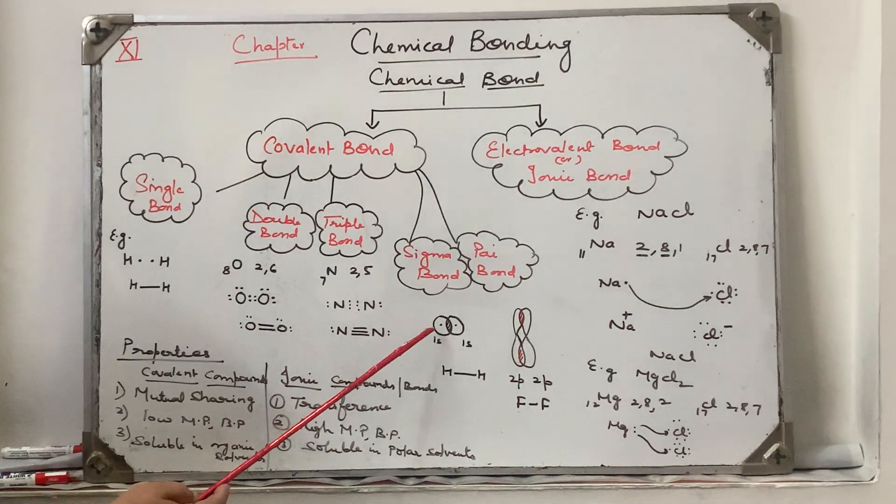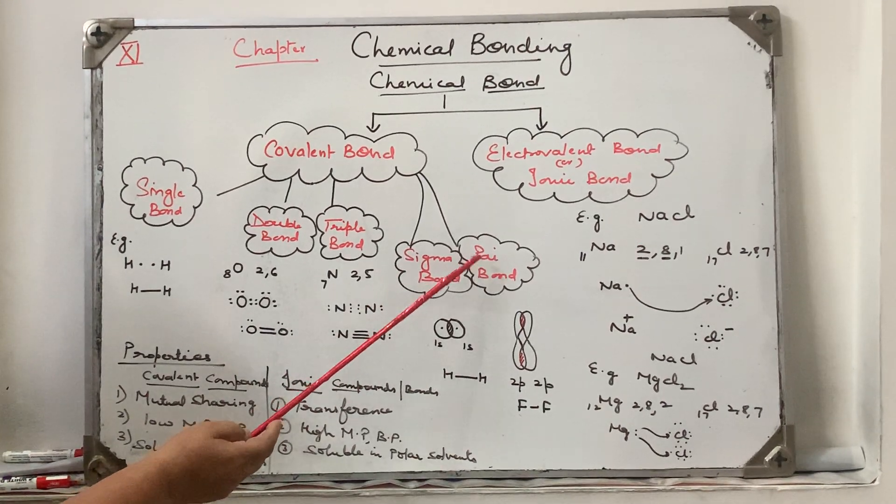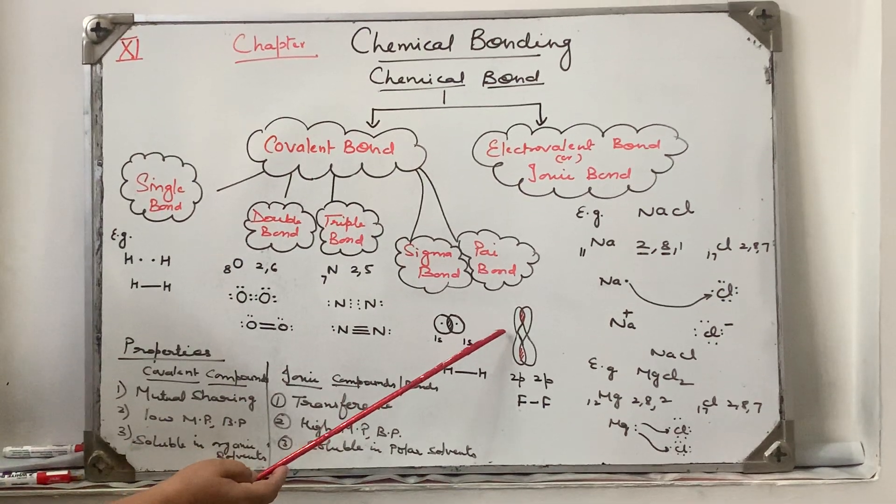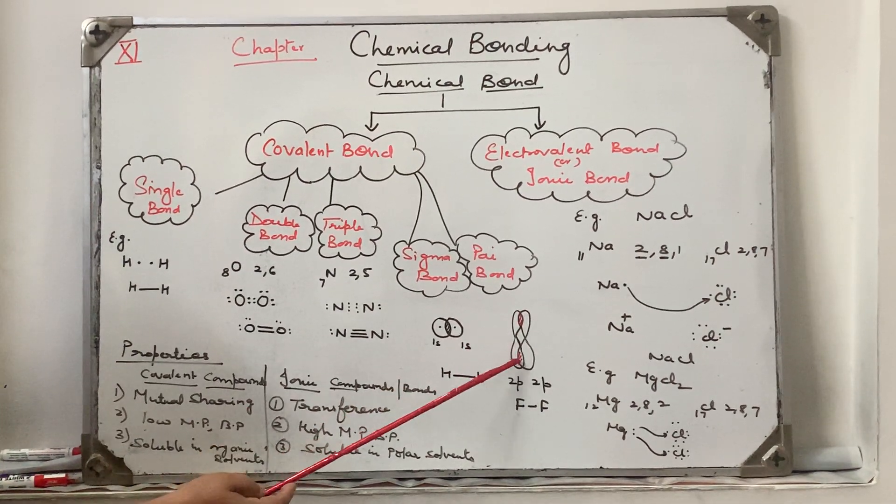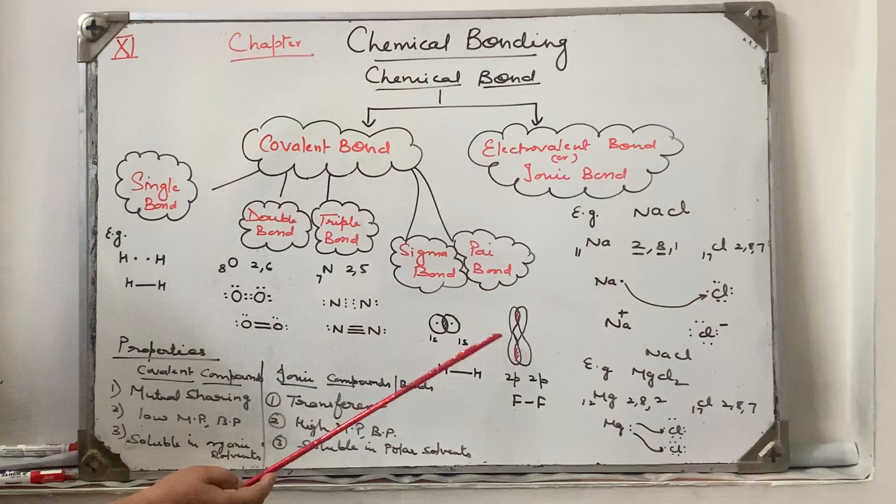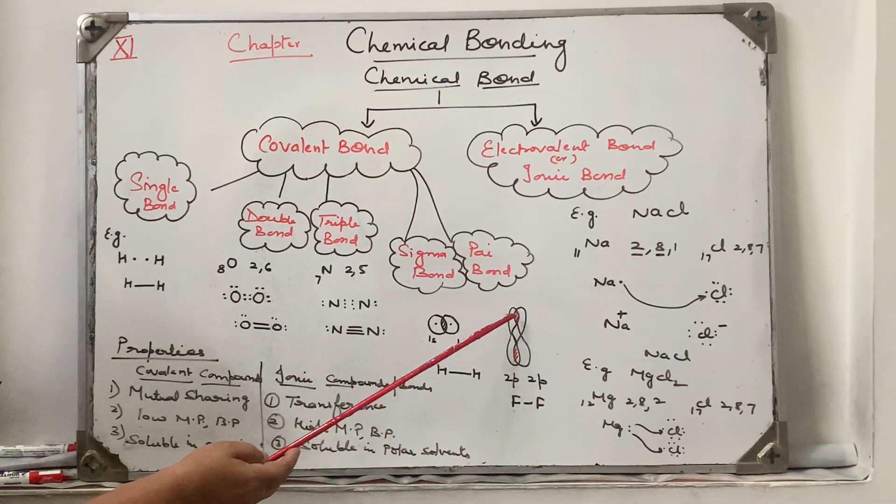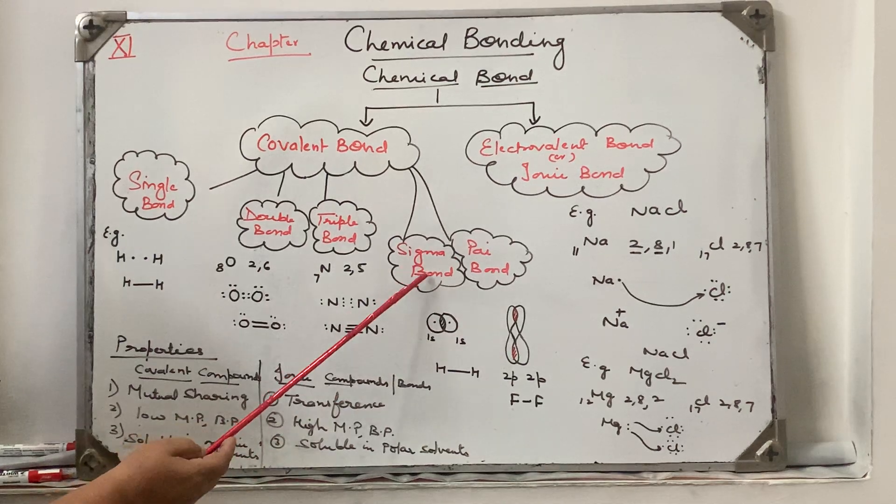But pi bond is at right angle to the nuclear axis, so its extent of overlapping is very less. It can be formed by px or py orbitals. For example, fluorine bond. So it is a weak bond. Sigma bond is stronger because overlapping is more; this is a weak bond.